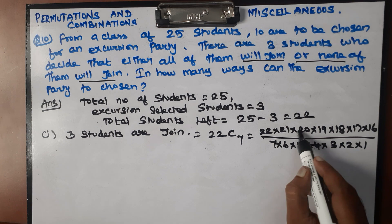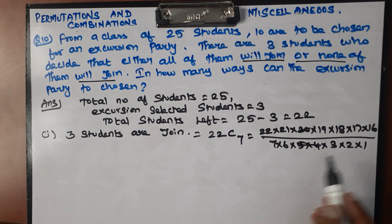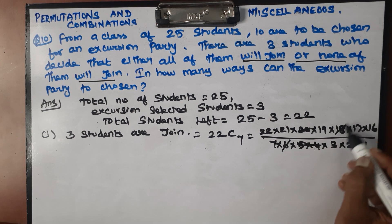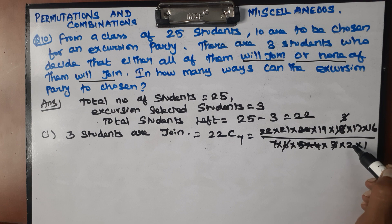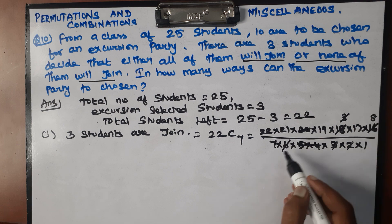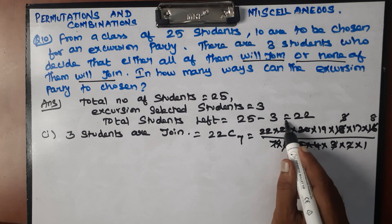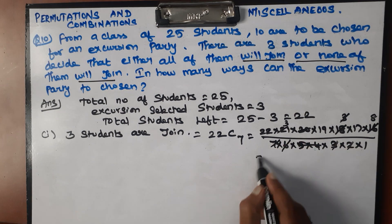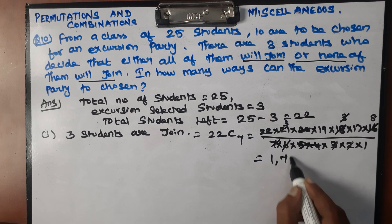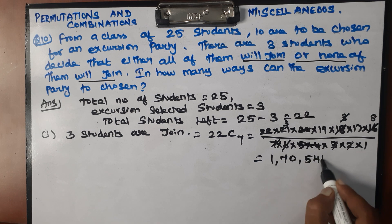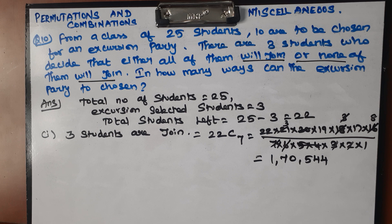Now we cancel: 5 fours are 20 — cancel. 6 threes are 18 — cancel. 7 threes are 21 — cancel. If you simplify it, the answer is 1,70,544.